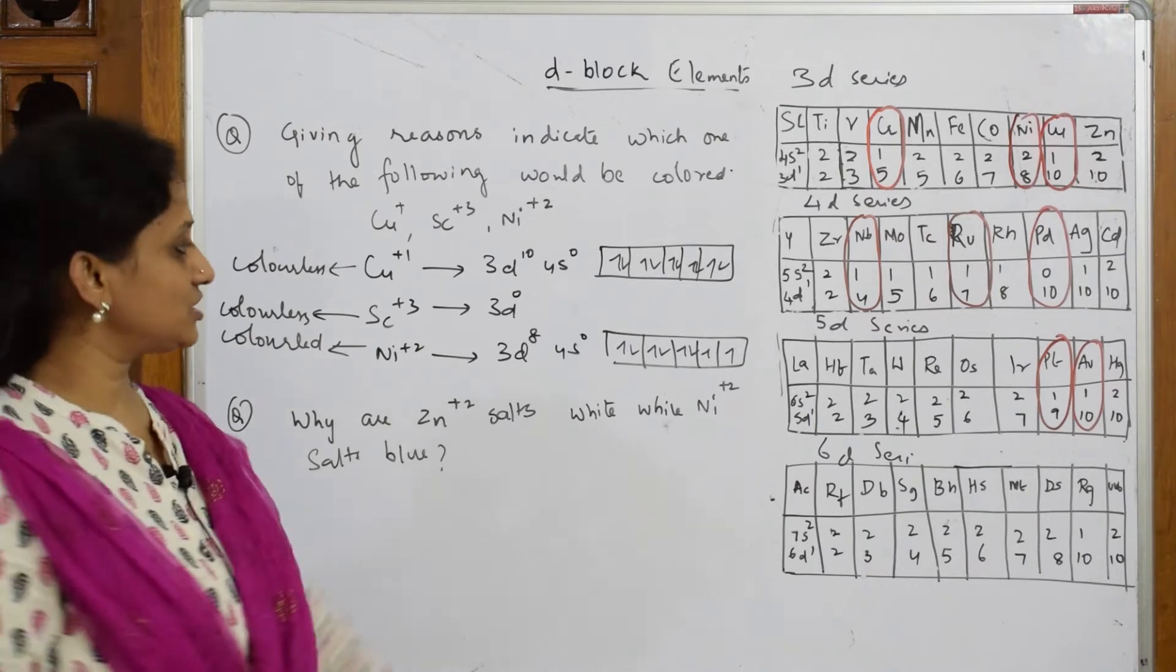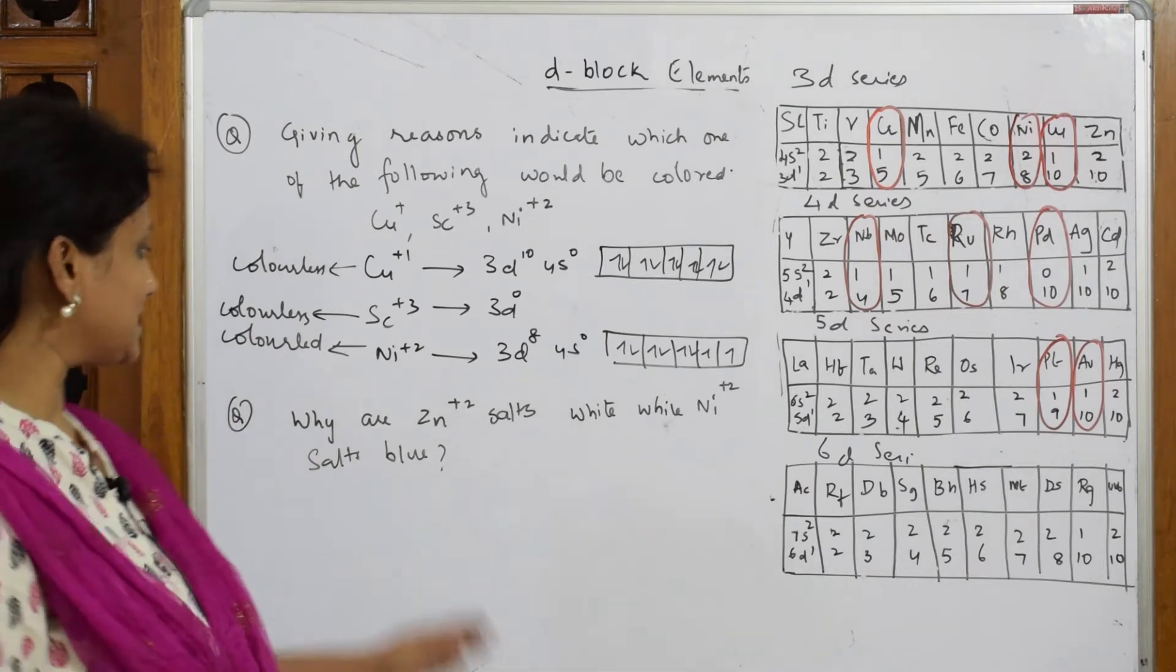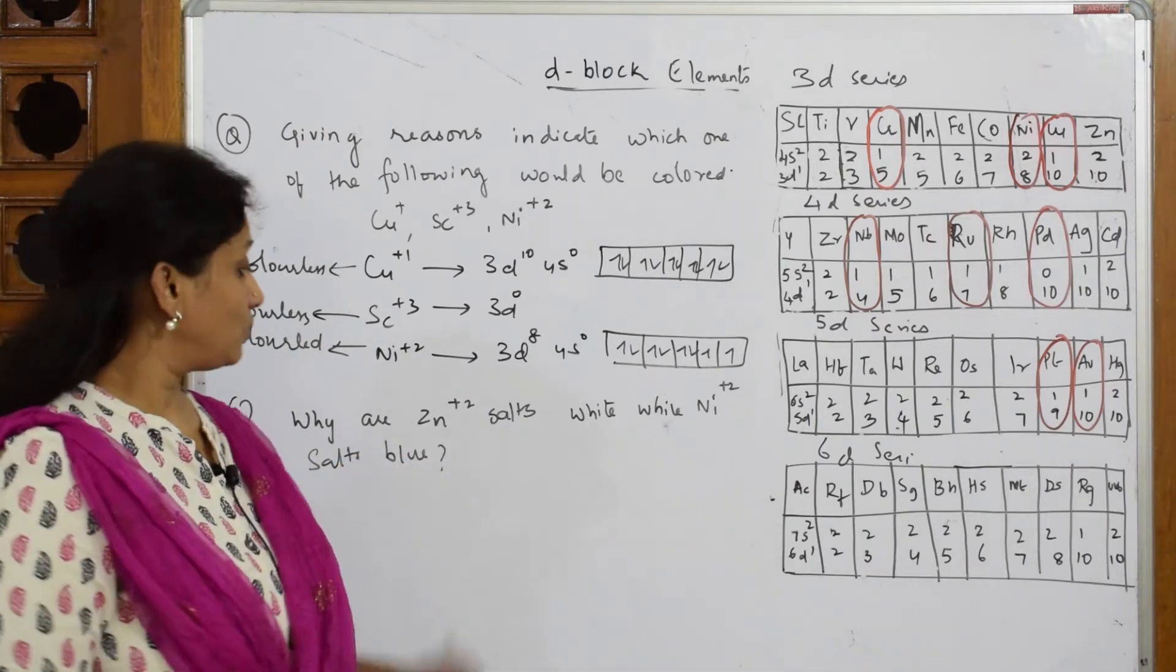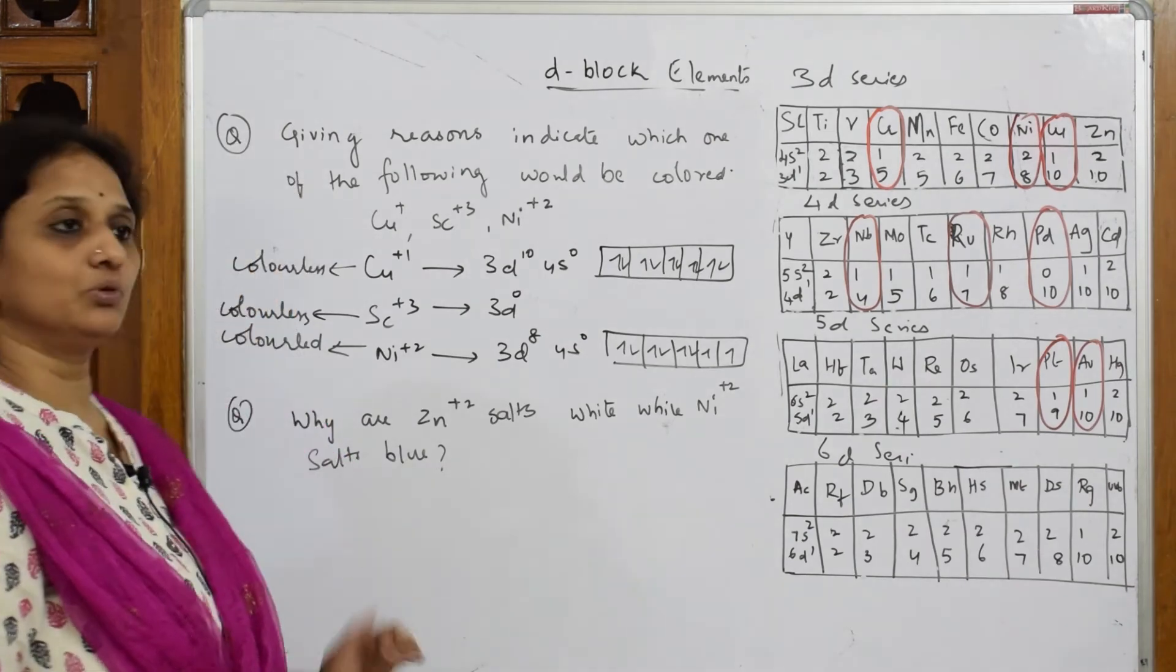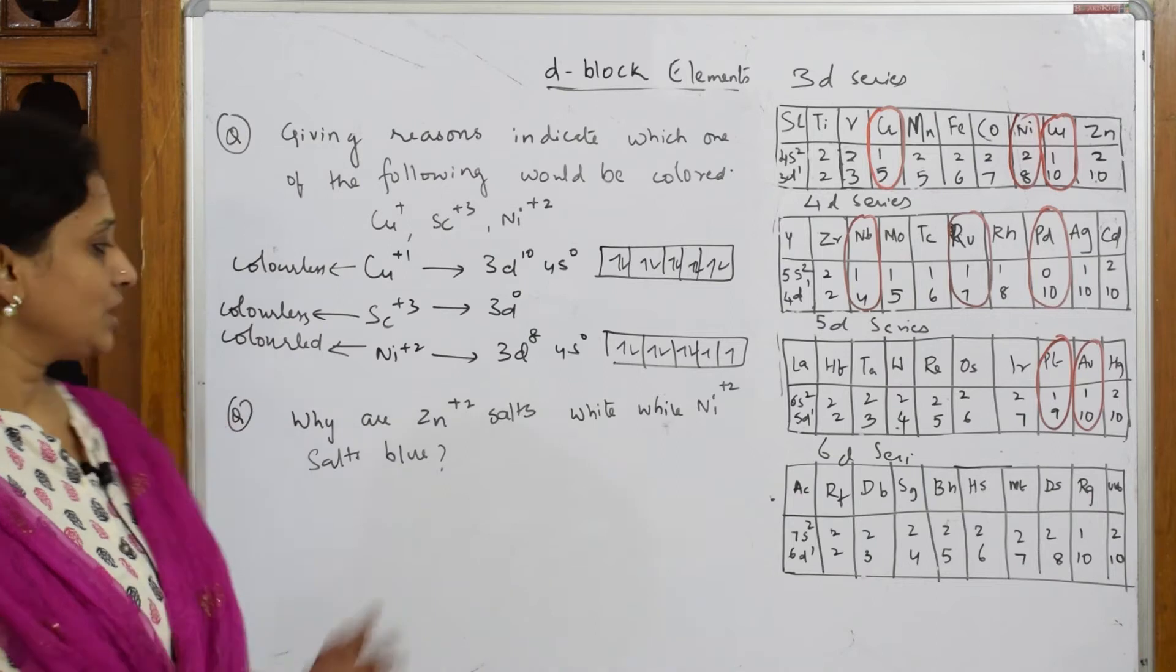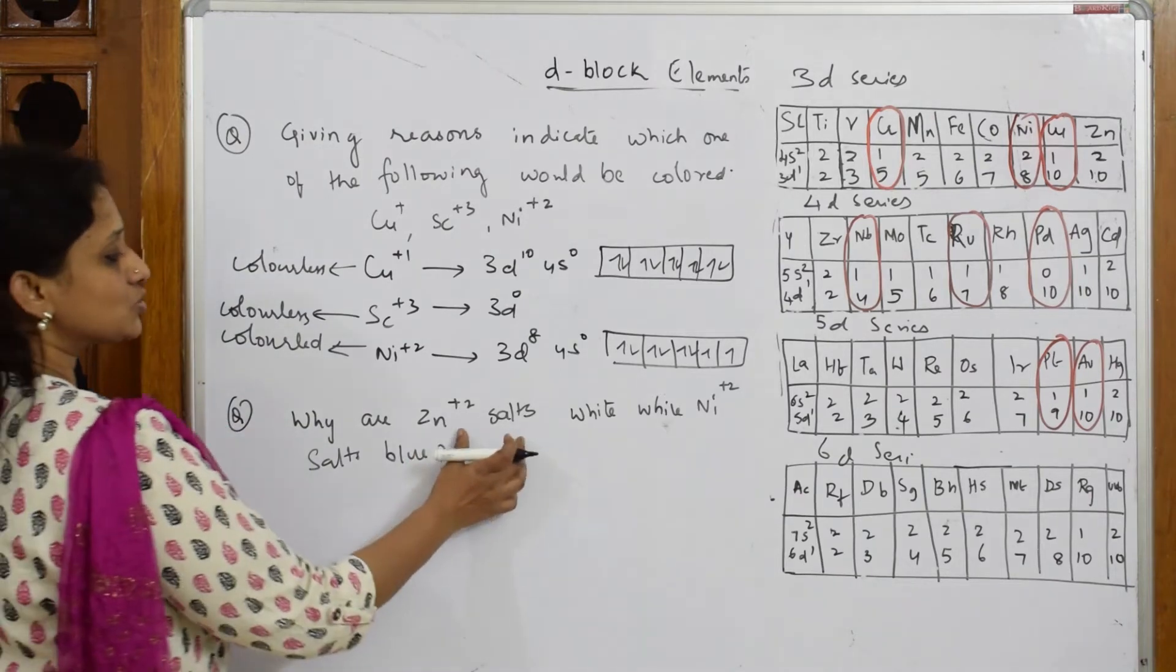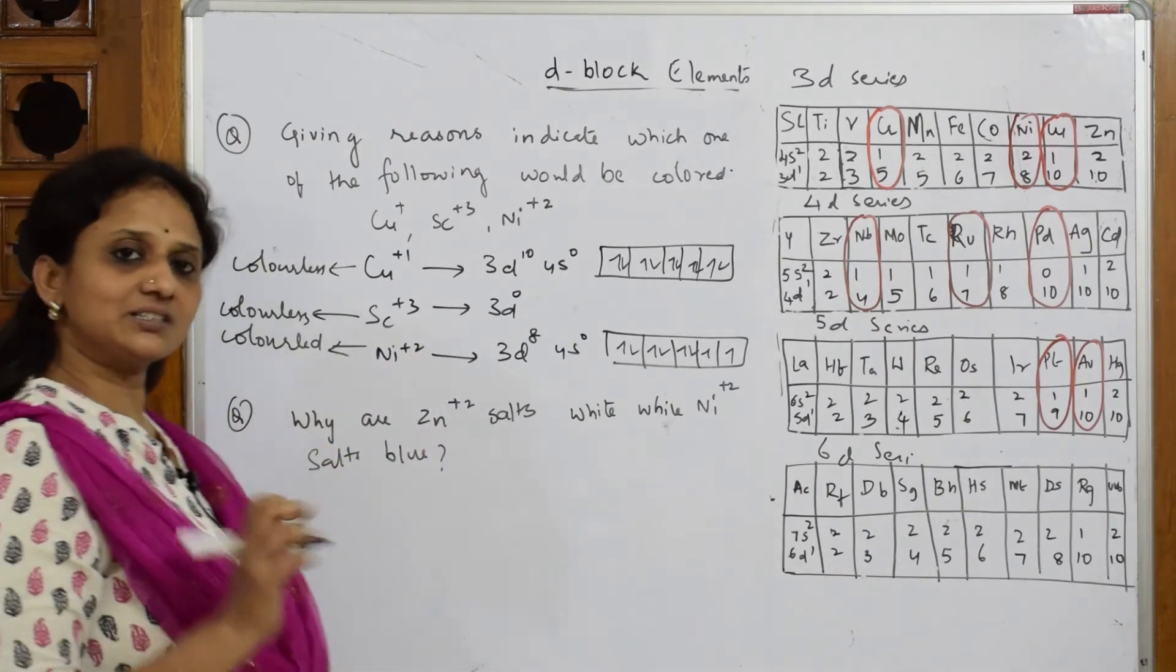Let us see the next question: why are Zn2+ salts white while Ni2+ salts are blue? Now they've given us color, I have to explain. They say Zn2+ salts white - first we'll see why it is white in color.